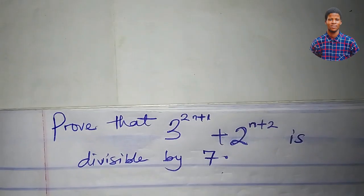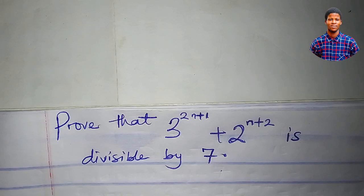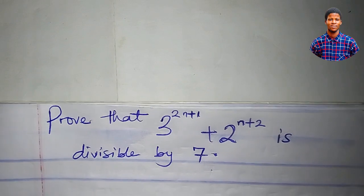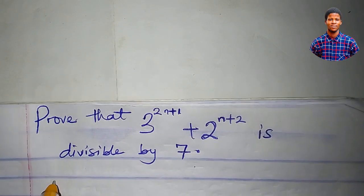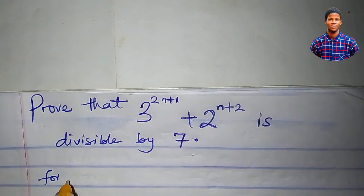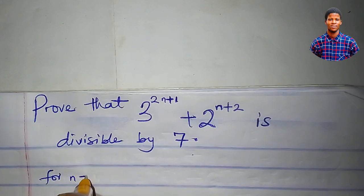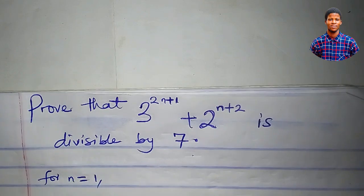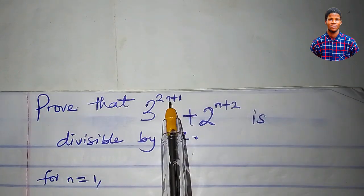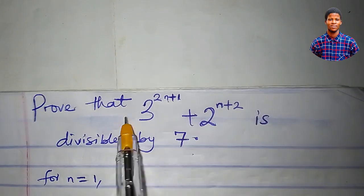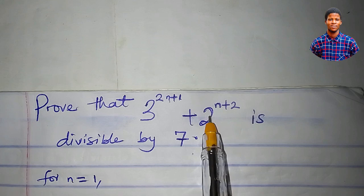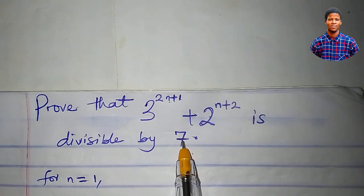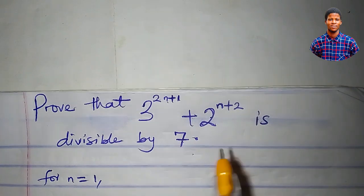The first step is to show that it is true for n equal to 1. For n equal to 1, let's plug in 1 for n in this expression and see if the value that we get is divisible by 7.